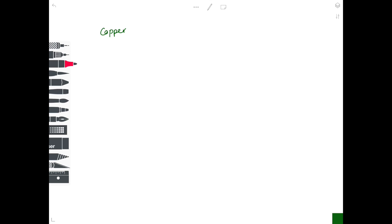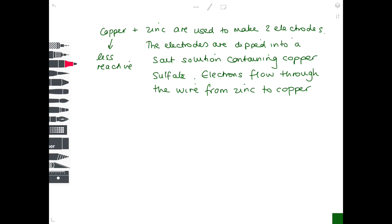Let's take a proper example — I'm going to pick copper and zinc. Notice that copper is far less reactive than zinc. In this example, copper and zinc are used to make two electrodes which are dipped into a salt solution containing copper sulfate. Electrons flow through the wire from the zinc to the copper. Because zinc is more reactive than copper, a displacement reaction takes place where the zinc effectively displaces the copper, producing copper solid plus zinc sulfate.